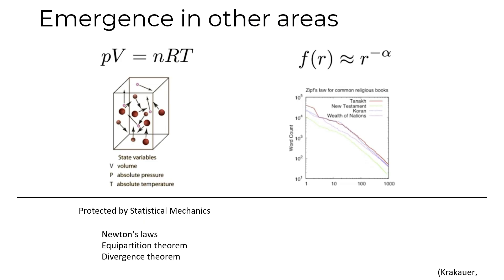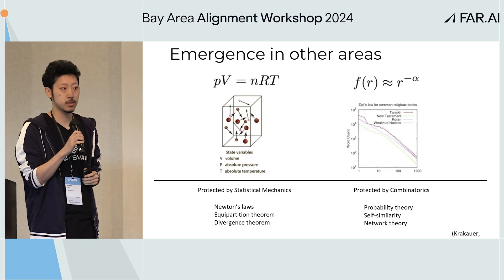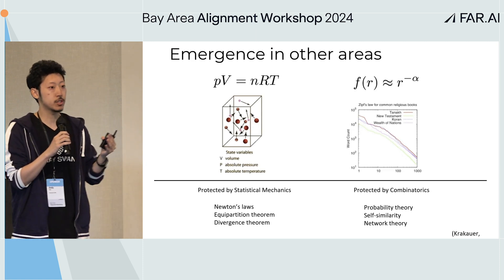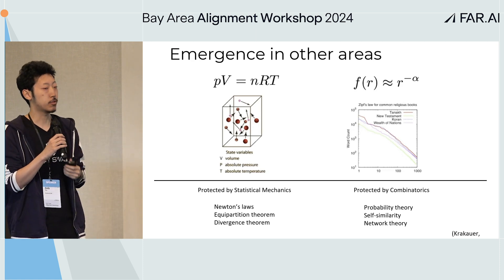Another example is Zipf's law — a universal rule for essentially all languages where you can predict the frequency of a certain token just by looking at its rank. There's probability theory and network theory at work, but it's protected by combinatorics so you don't need to look under the hood. We want to discover similarly generalizable rules and mechanisms for neural nets.